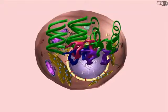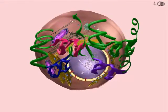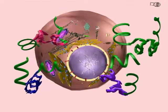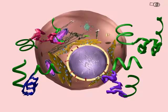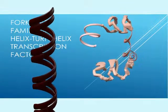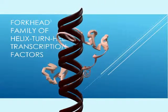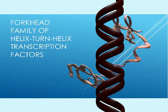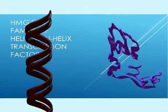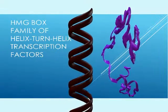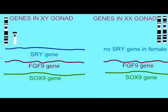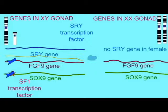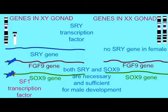In ancestral eukaryotes, there were gene duplications in the Helix-Turn-Helix family of transcription factors, creating a number of subfamilies which would undergo subsequent duplications. These families within the Helix-Turn-Helix group include the Forkhead family and the HMG-Box protein family, which includes the Sox proteins. Sox proteins play a number of roles in fetal development, including the Sox9 and SRY proteins, which are essential for male development in mammals.